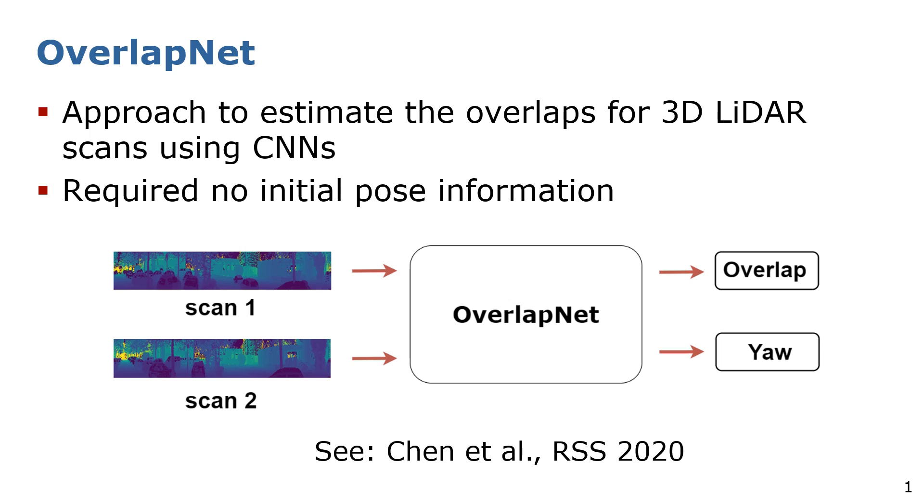Now I would like to recap our previous work OverlapNet. OverlapNet uses a deep neural network and provides the overlap and relative yaw angle estimates between pairs of LiDAR scans in an end-to-end fashion. Based on such estimates, in our previous work we tackled the loop closing problem by integrating OverlapNet into a SLAM system.